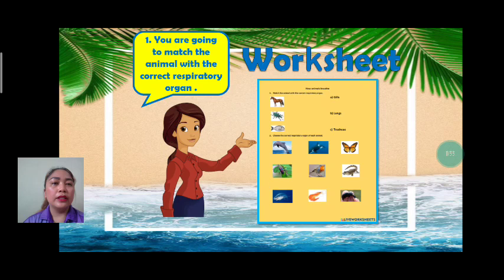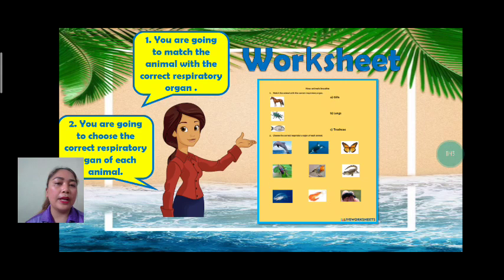Now let's answer your worksheets. You are going to match the animal with the correct respiratory organ. For number two, you are going to choose the correct respiratory organ of each animal — either gills, lungs, or trachea. That's all for today. Thank you. Bye-bye.